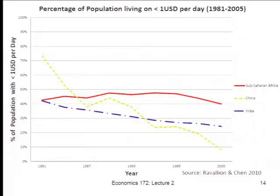There are other ways of looking at these trends beyond just per capita income. Another statistic of great interest is what's happening to extreme poverty in different regions. One common measure is the dollar-a-day poverty line — arbitrary but meaningful. Economists have looked at what one dollar buys in poor countries, and in many of them, a dollar a day buys just enough to eat and maybe get clothing — a subsistence level. If you're earning less than a dollar a day, you're really on the edge of survival.